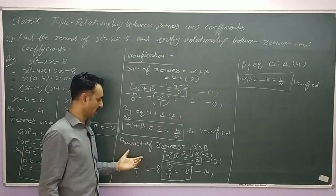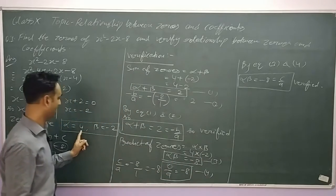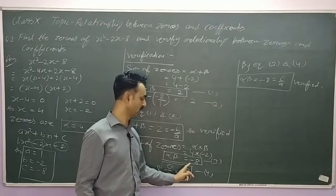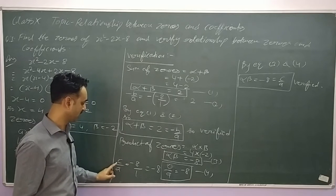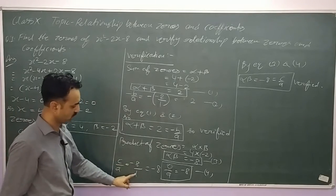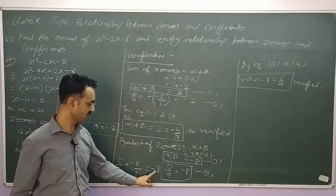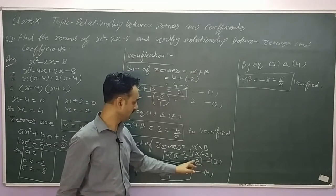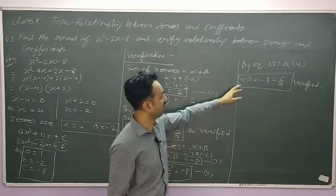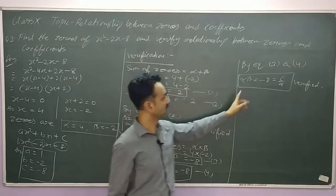Now for the other relationship — product of zeros: alpha into beta equals 4 times (minus 2) equals minus 8, which is equation 3. The RHS is c upon a: c upon a equals minus 8 upon 1 equals minus 8, which is equation 4. By equations 3 and 4, alpha beta equals minus 8 equals c upon a. So this is also verified.